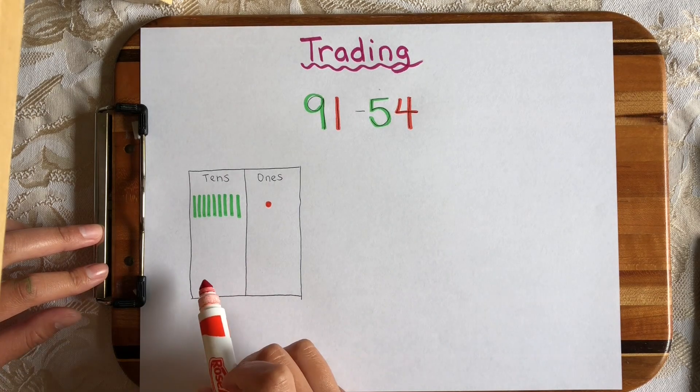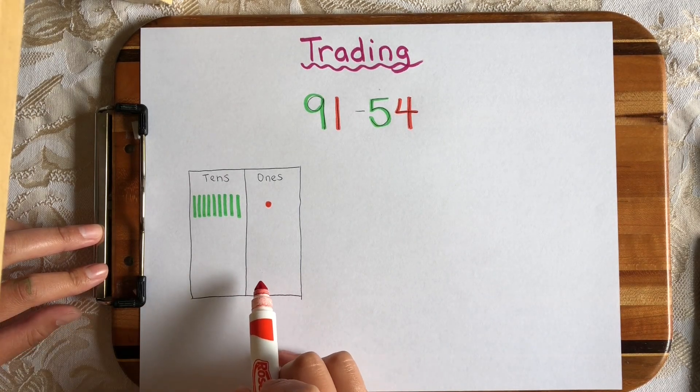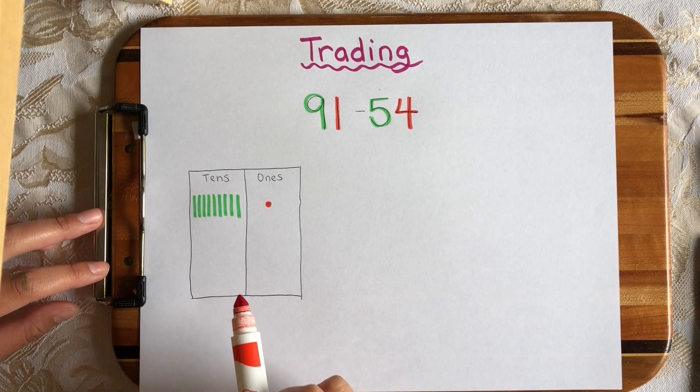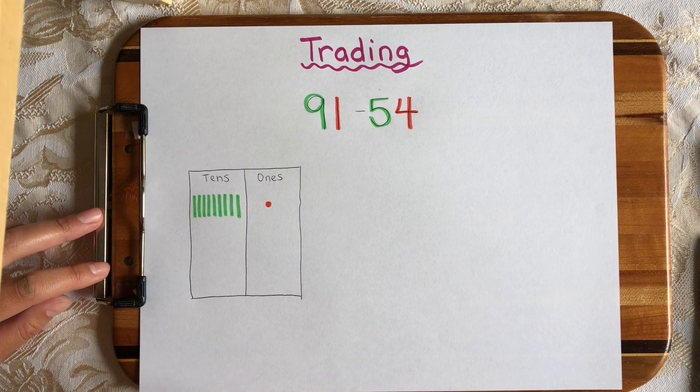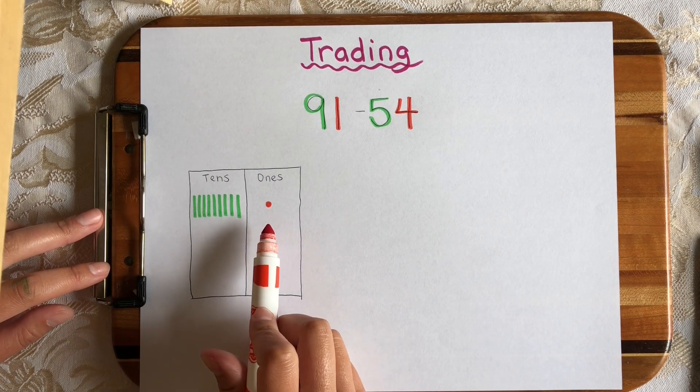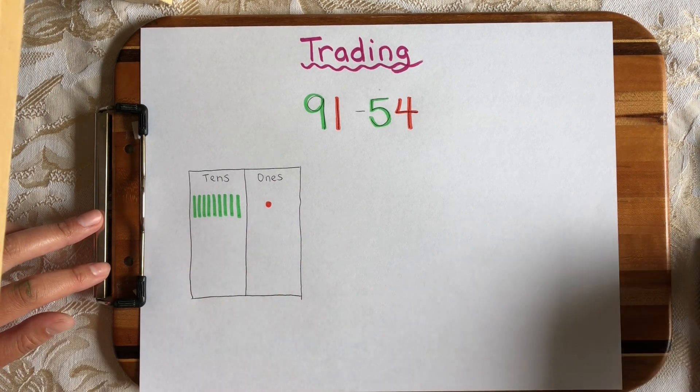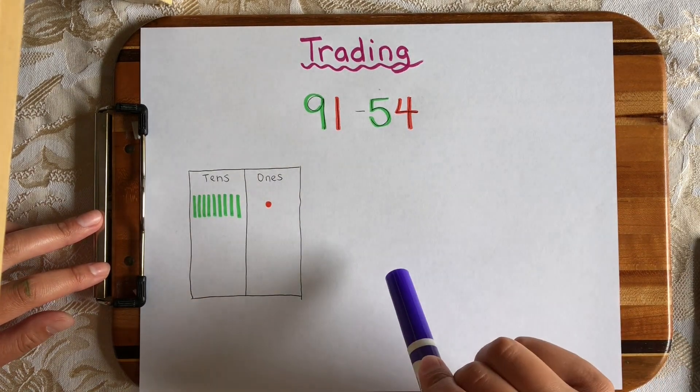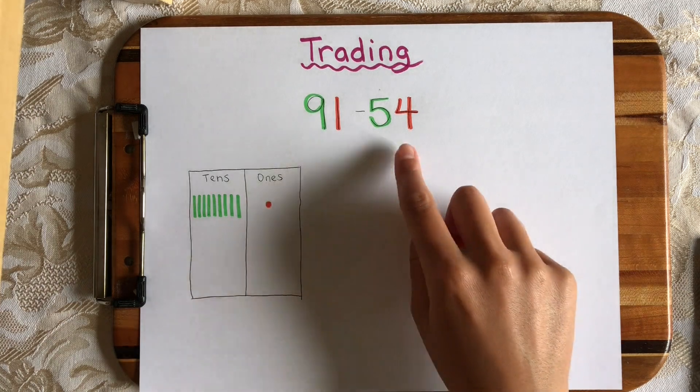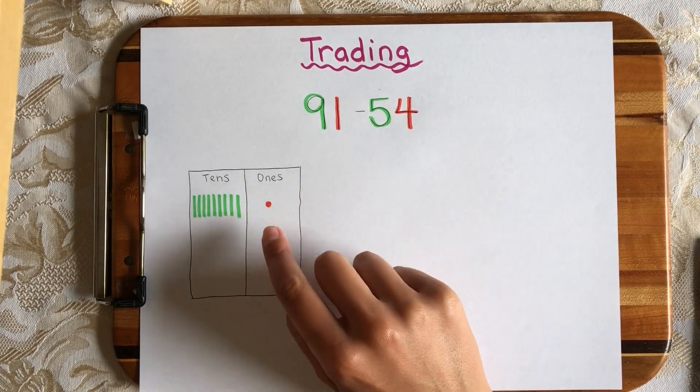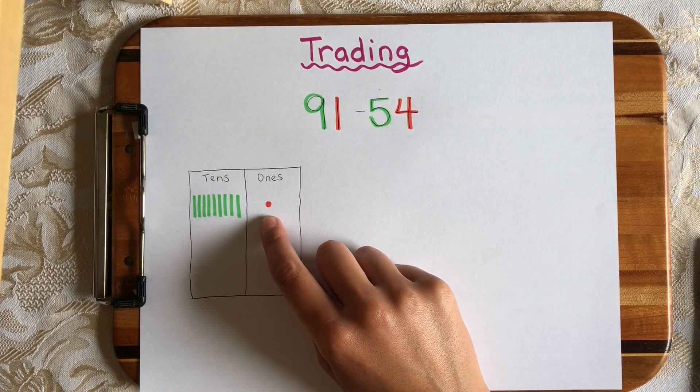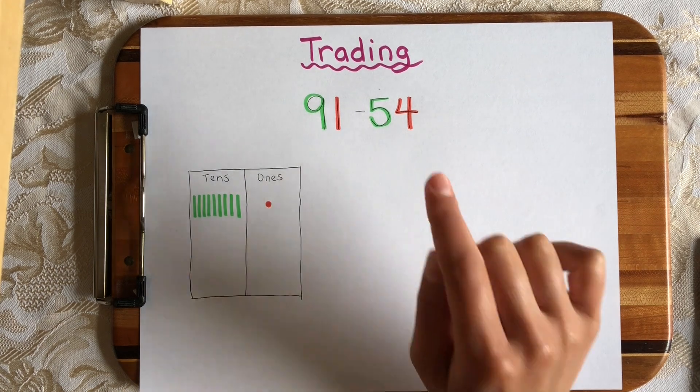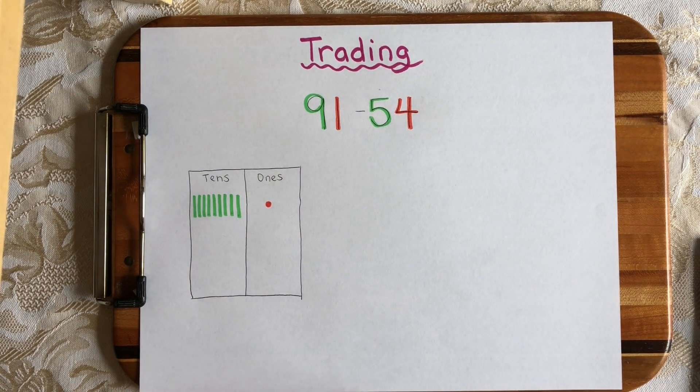This time, instead of drawing in down here 54 like we would do if we were adding, I'm going to cross out numbers from here because we are subtracting. So we need to subtract 5 tens and 4 ones. Well, if I start with the 1s, I only have 1 one right there, but I need to subtract 4 ones because I'm subtracting 54.